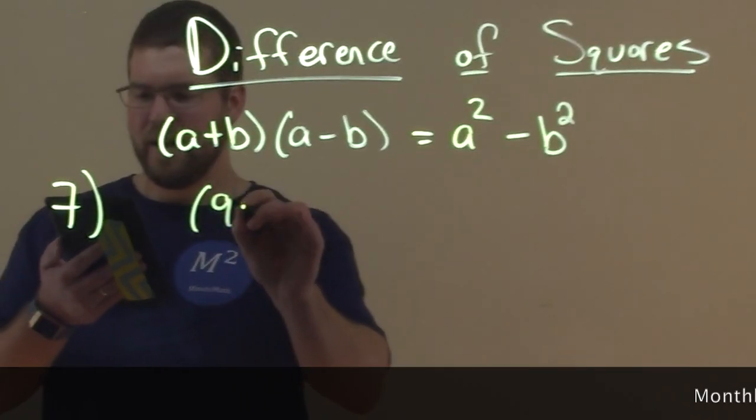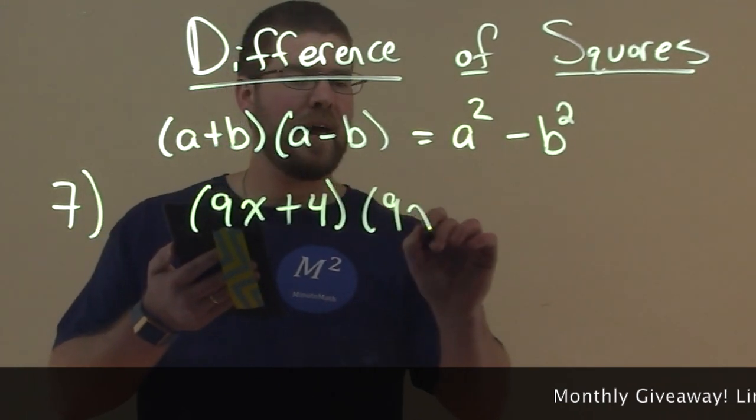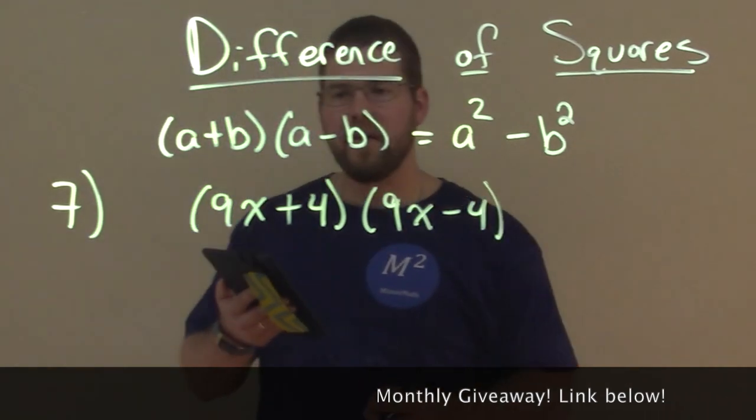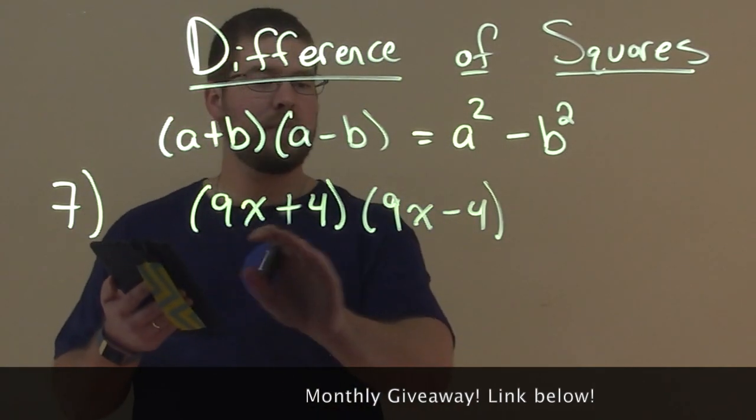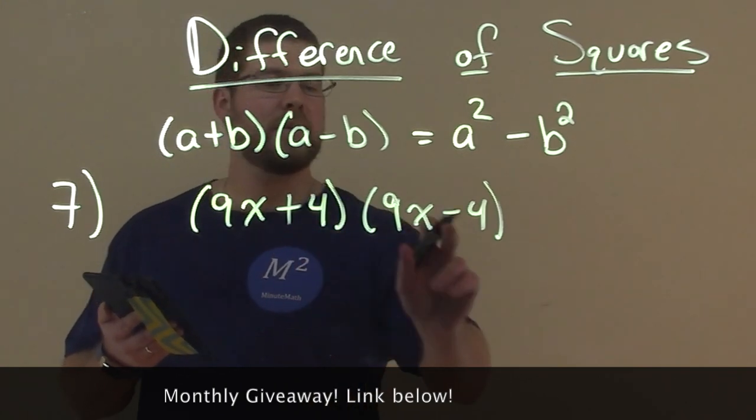We have (9x+4)(9x-4). So the first term is 9x. We see it works, right? 9x, 9x, 4, 4, addition, subtraction.